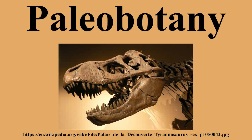An important early land plant fossil locality is the Rhynie Chert, found outside the village of Rhynie in Scotland. The Rhynie Chert is an early Devonian sinter deposit composed primarily of silica. It is exceptional due to its preservation of several different clades of plants, from mosses and lycopods to more unusual, problematic forms. Many fossil animals, including arthropods and arachnids, are also found in the Rhynie Chert.